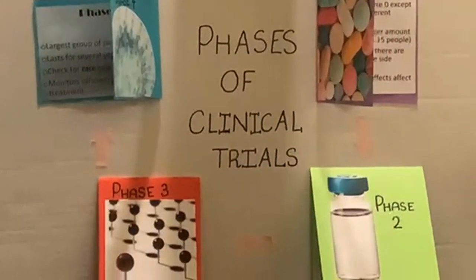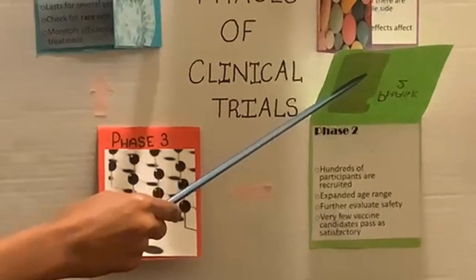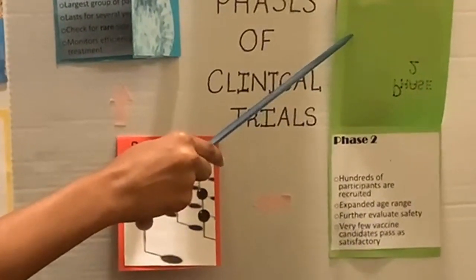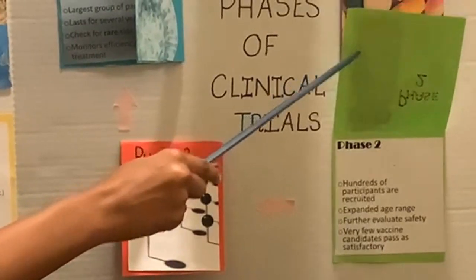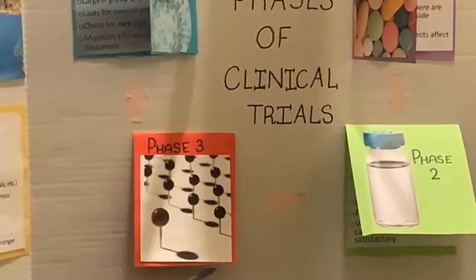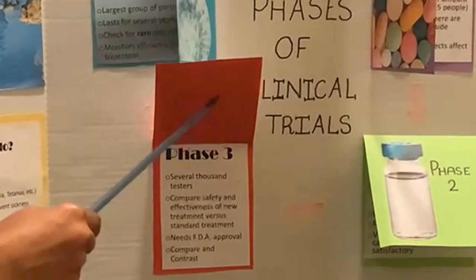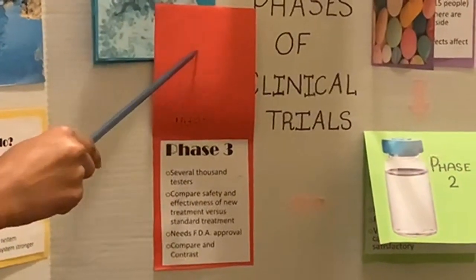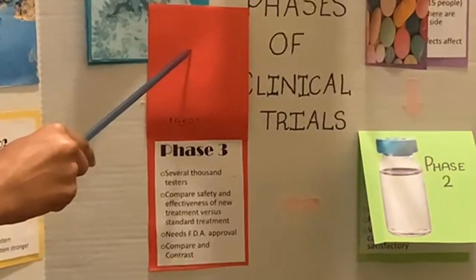Then the vaccine moves on to phase two. Hundreds of participants are recruited, the age range has expanded, and they're further evaluating safety. If the vaccine passes the satisfactory, it moves on to phase three. Several thousand testers are recruited, and it compares the safety of the study treatment to others.